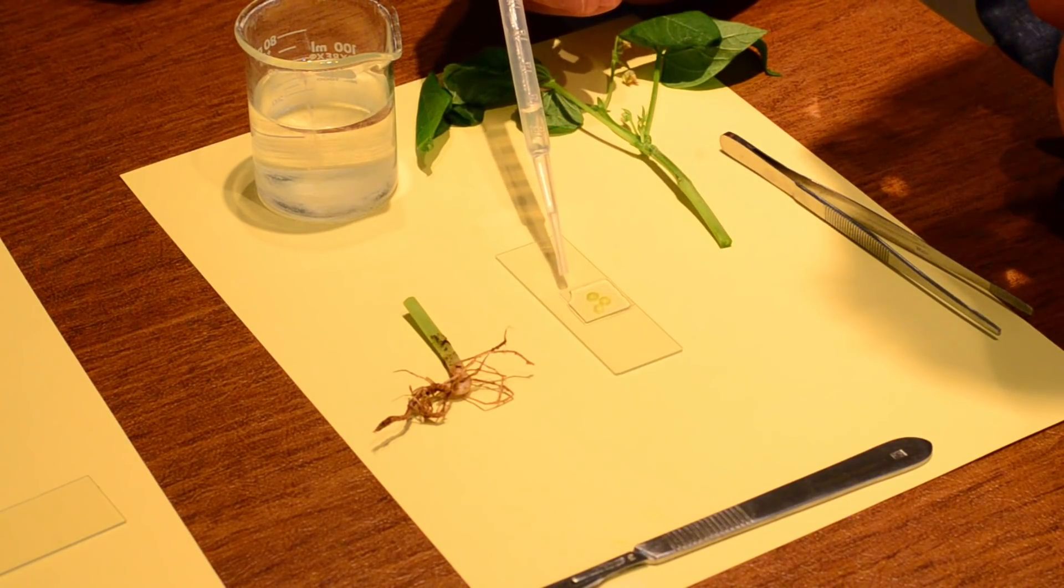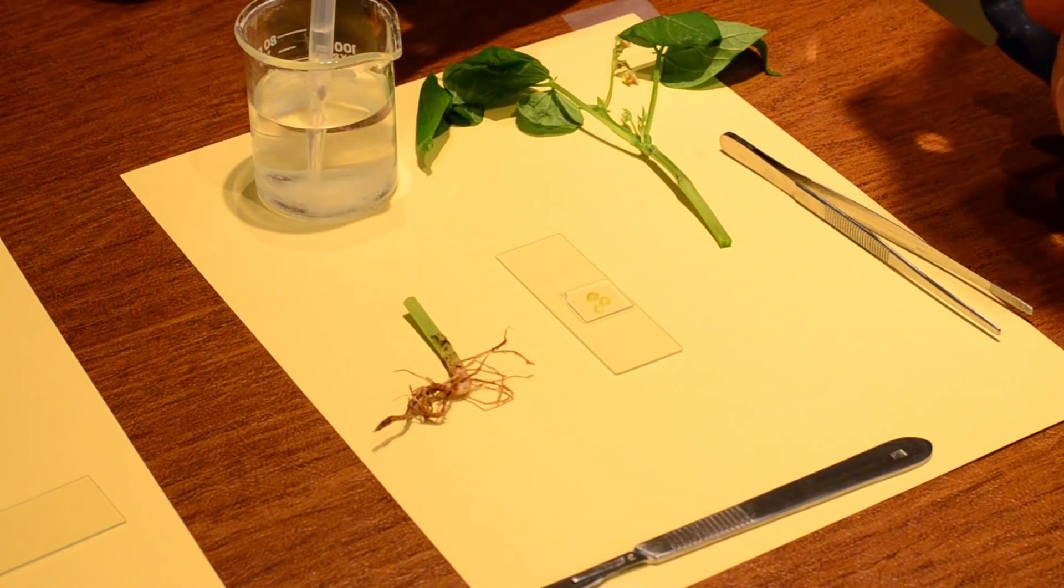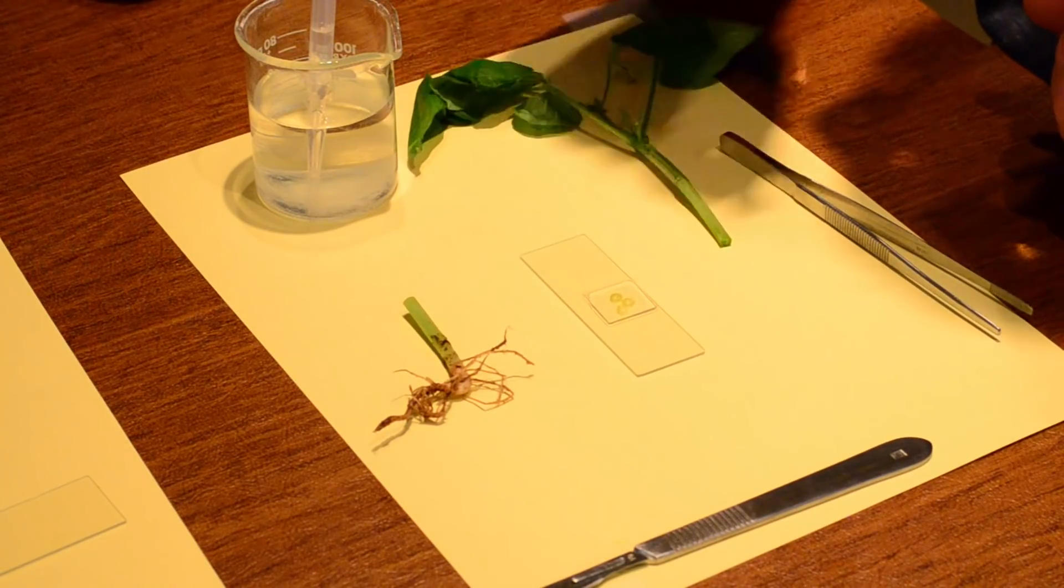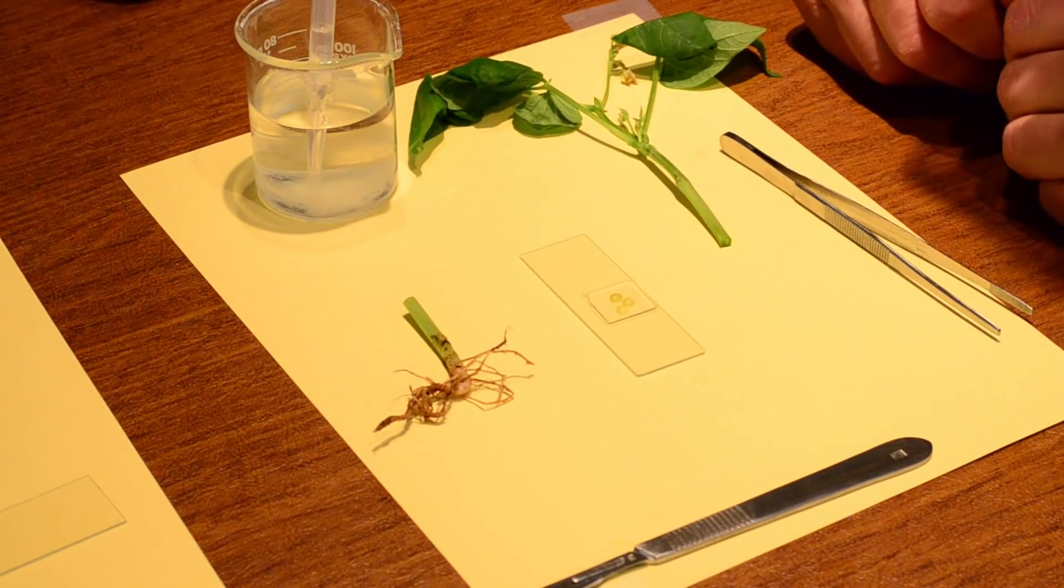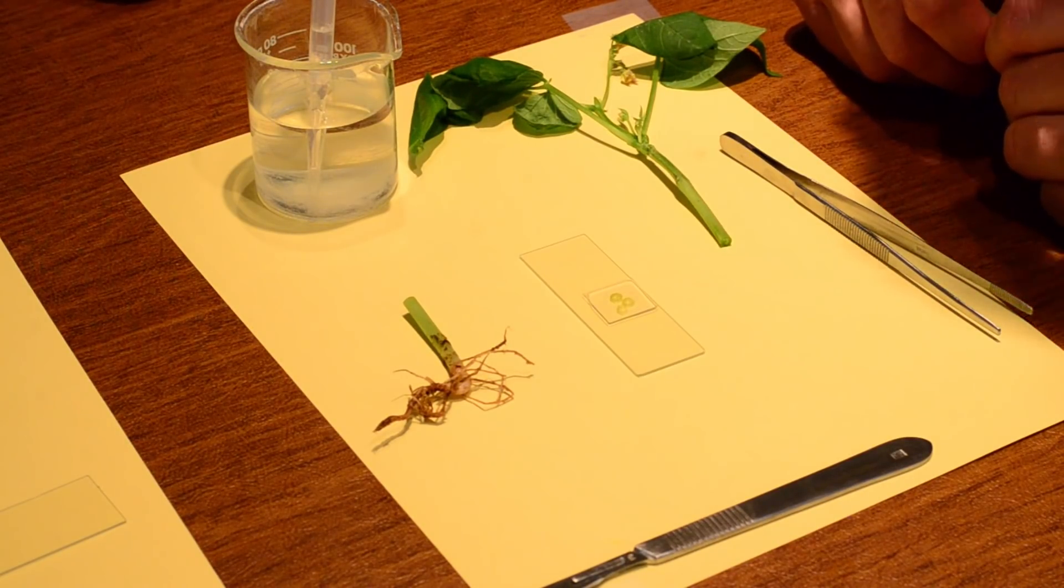And when I put this under the scope, I only need one. And I need a couple just to kind of demonstrate. But that is beautiful. Wonderful patterns. And we'll be able to see the xylem and phloem and where the food and water would travel through in the plant.